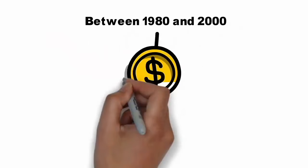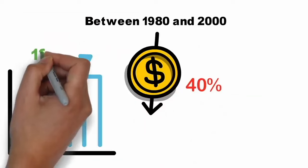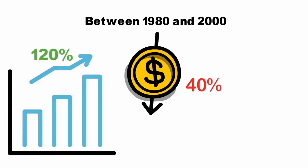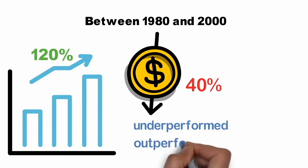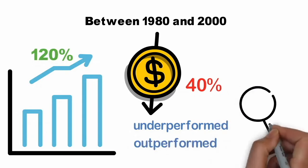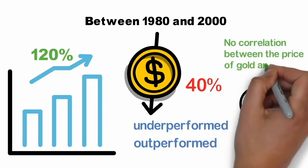Between 1980 and 2000, the price of gold lost over 40% of its value while the CPI rose nearly 120%. And during historical periods of inflation, gold sometimes underperformed and sometimes outperformed. Looking at both historical and current trends, there is no correlation between the price of gold and CPI.